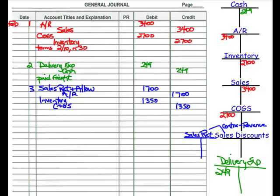Let's post this journal entry to the T accounts. Sales returns and allowances gets $1,700 — this account represents the amount customers have returned. Accounts receivable goes down by $1,700, which makes sense because the customer isn't going to pay us $3,400; they'll pay us less the $1,700 that was returned. The inventory account goes up by $1,350 because that inventory came back and we can sell it to somebody else. Cost of goods sold goes down by $1,350 because we didn't sell those goods to the customer — they came back.